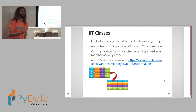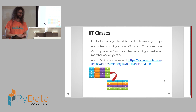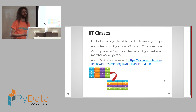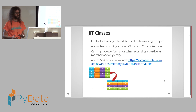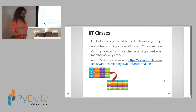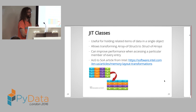Another new feature is JIT classes. There were JIT classes in Numba before, but they were removed as part of a big refactor focusing on performance and cleanup. Now JIT classes are back, but quite different. They can be used to hold related items of data together within a single object.